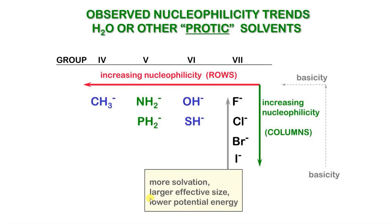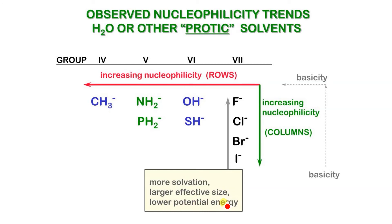Nucleophilicity trend summary: more solvation, larger effective size, and lower potential energy are the three factors that determine the nucleophilicity trend. In H2O or other protic solvents, moving down a group increases solvation and decreases nucleophilicity.